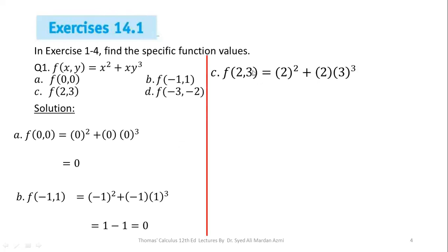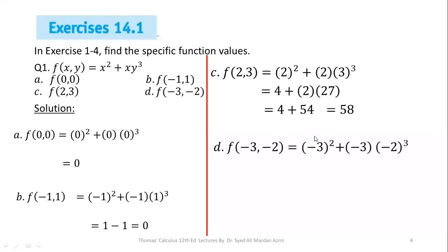For part c, we replace x with 2 and y with 3, giving 2² + 2·3³ = 4 + 2·27 = 4 + 54 = 58. For part d, we replace x with −3 and y with −2 in the given function, and after simplification our answer is 33.